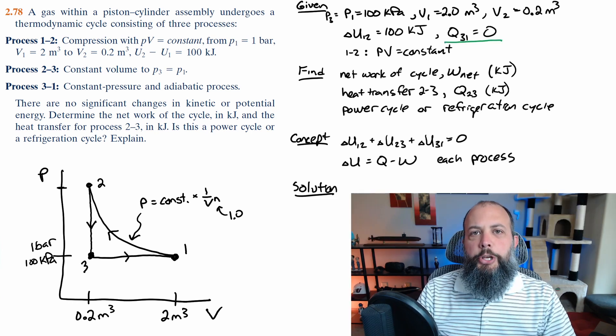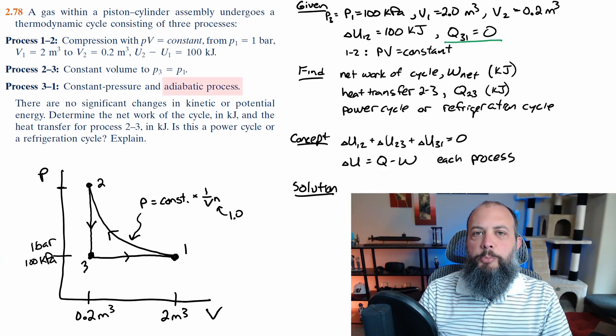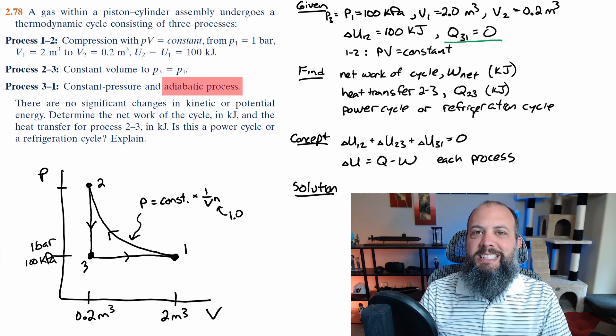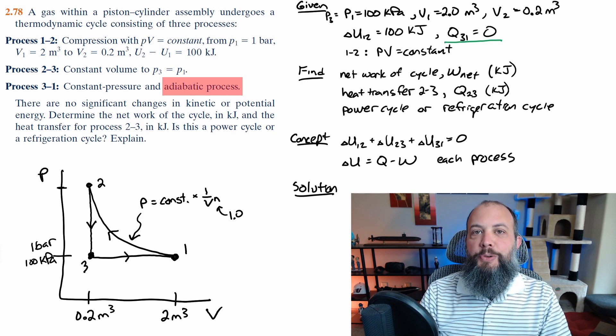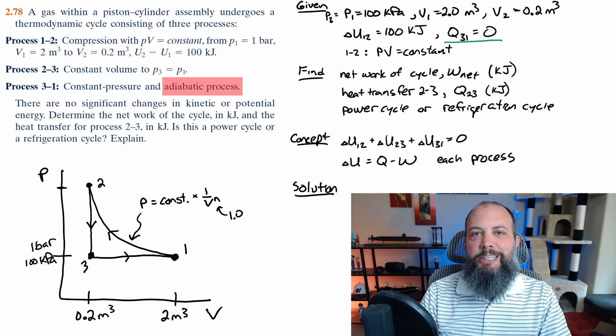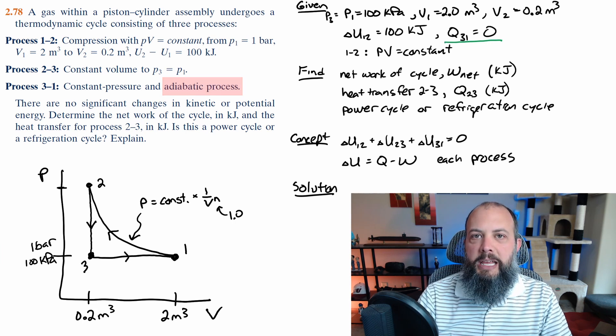One piece of the given that's worth explaining is Q31 equals zero. In the problem statement we were given that 31 is an adiabatic process that word adiabatic means that heat transfer for that process is zero so that's where this Q31 equals zero term came from.